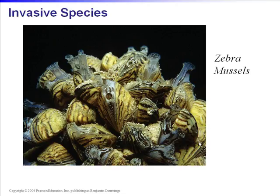Invasive species pose new threats to community stability. An invasive species is a non-native organism that arrives in a community from elsewhere, spreads, and becomes dominant, potentially substantially altering the community. This mainly involves species that have been introduced, either purposely or not, by humans. The central case in this chapter is the zebra mussels in the Great Lakes.